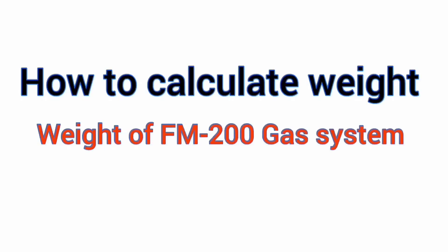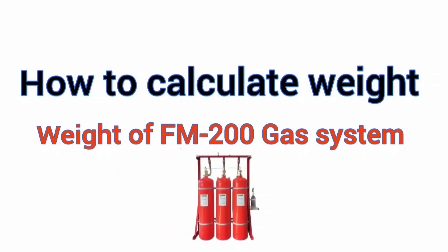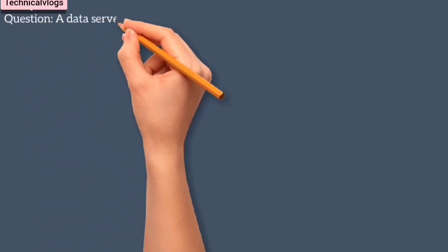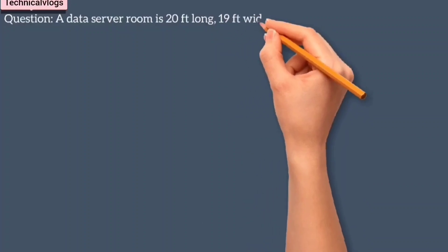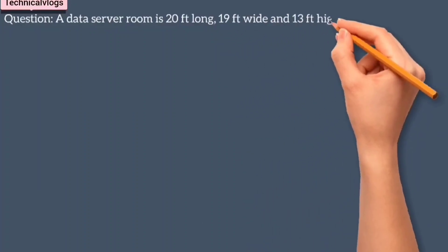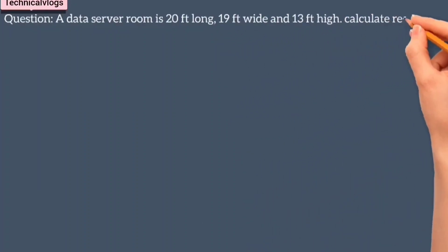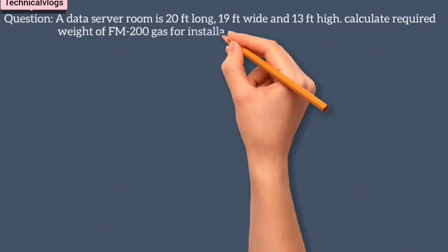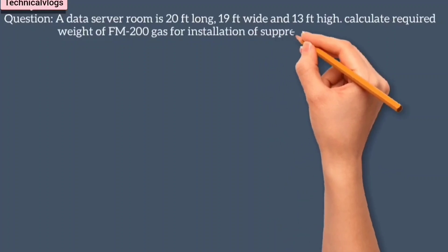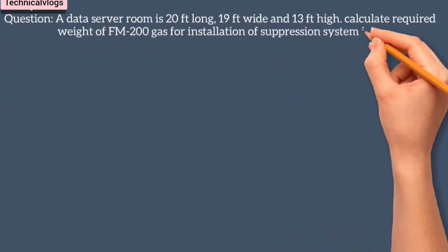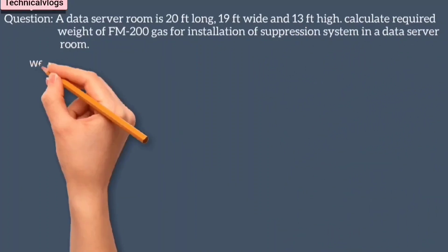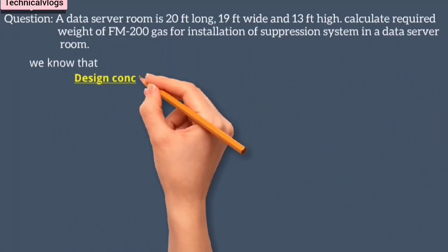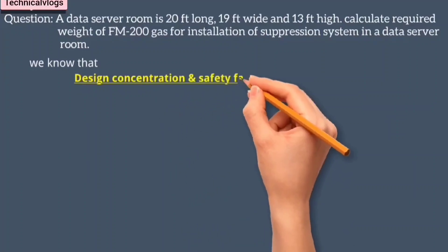How to calculate the weight of FM-200 gas for a suppression system. Let's take one question. A data server room is 20 feet long, 19 feet wide, and 13 feet high. Calculate the required weight of FM-200 gas for installation of a suppression system in this data server room.